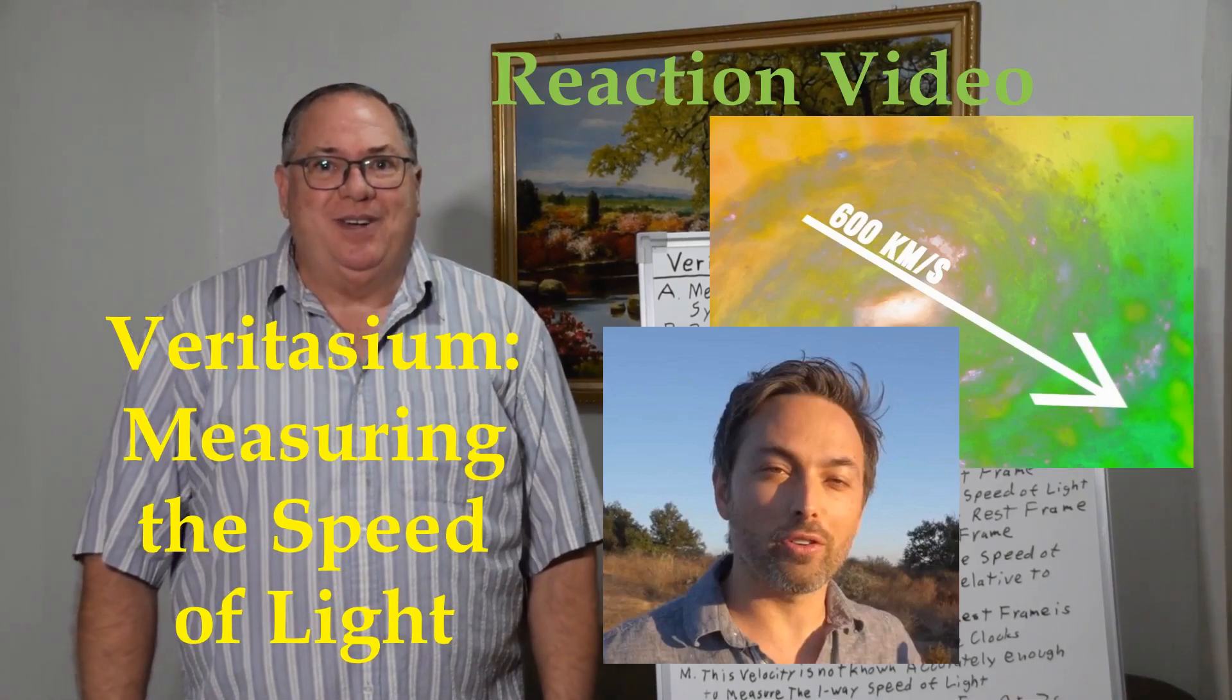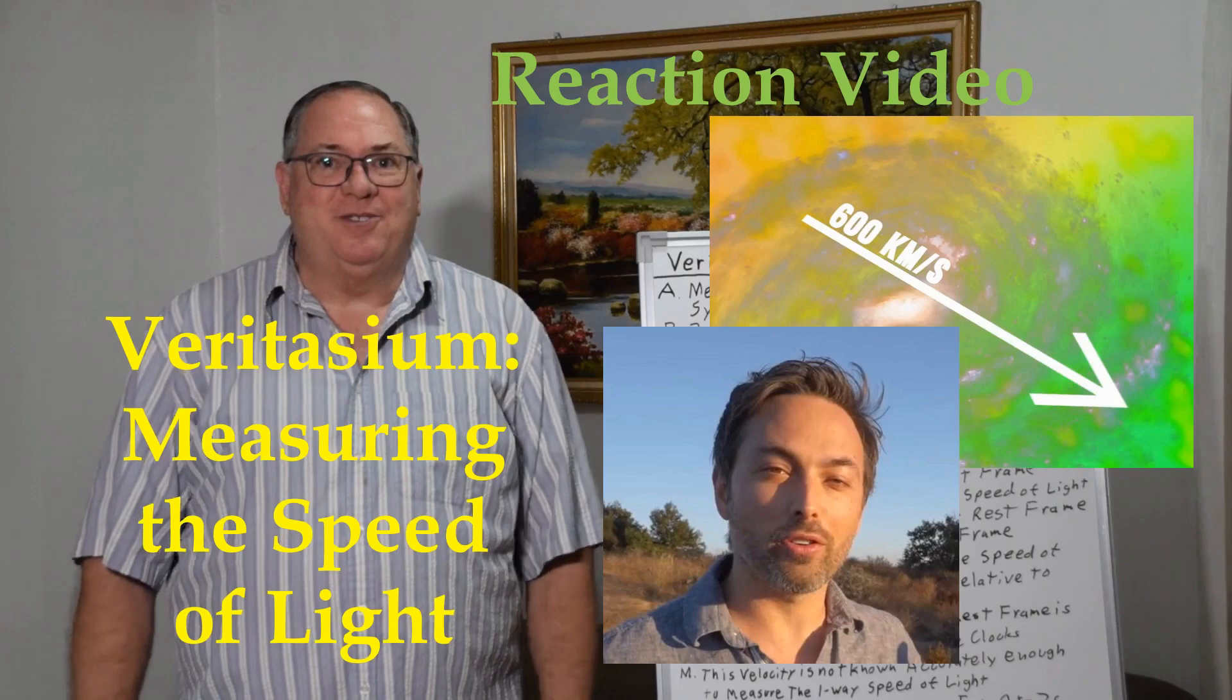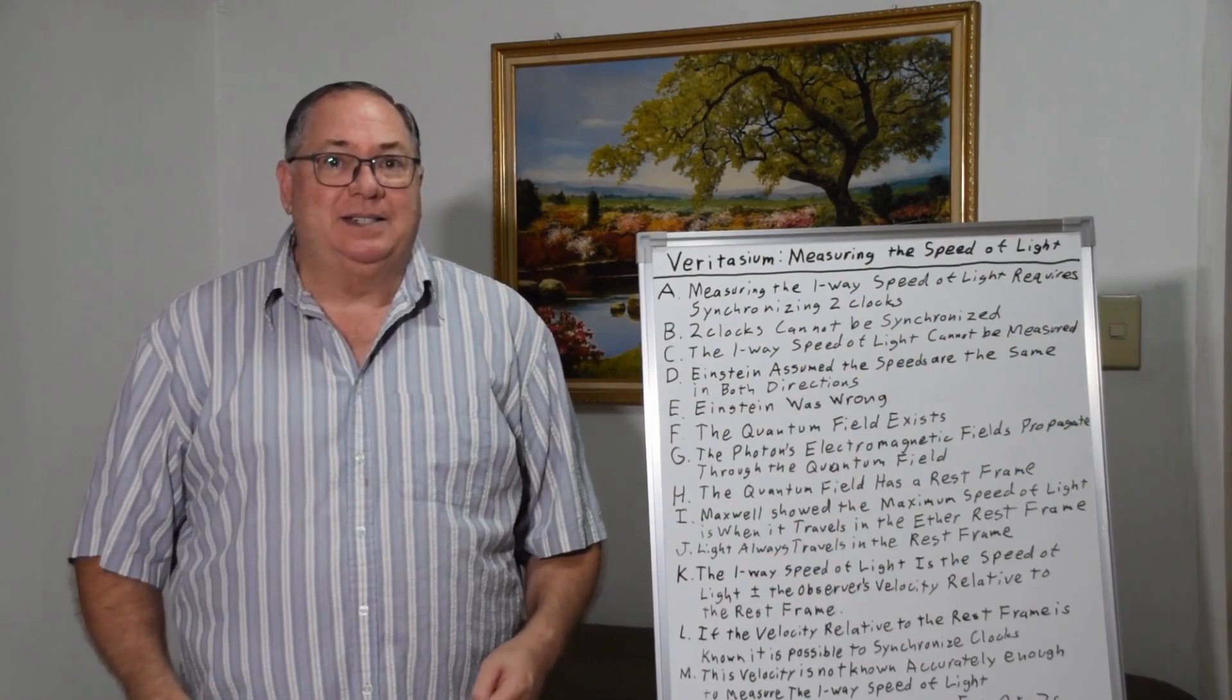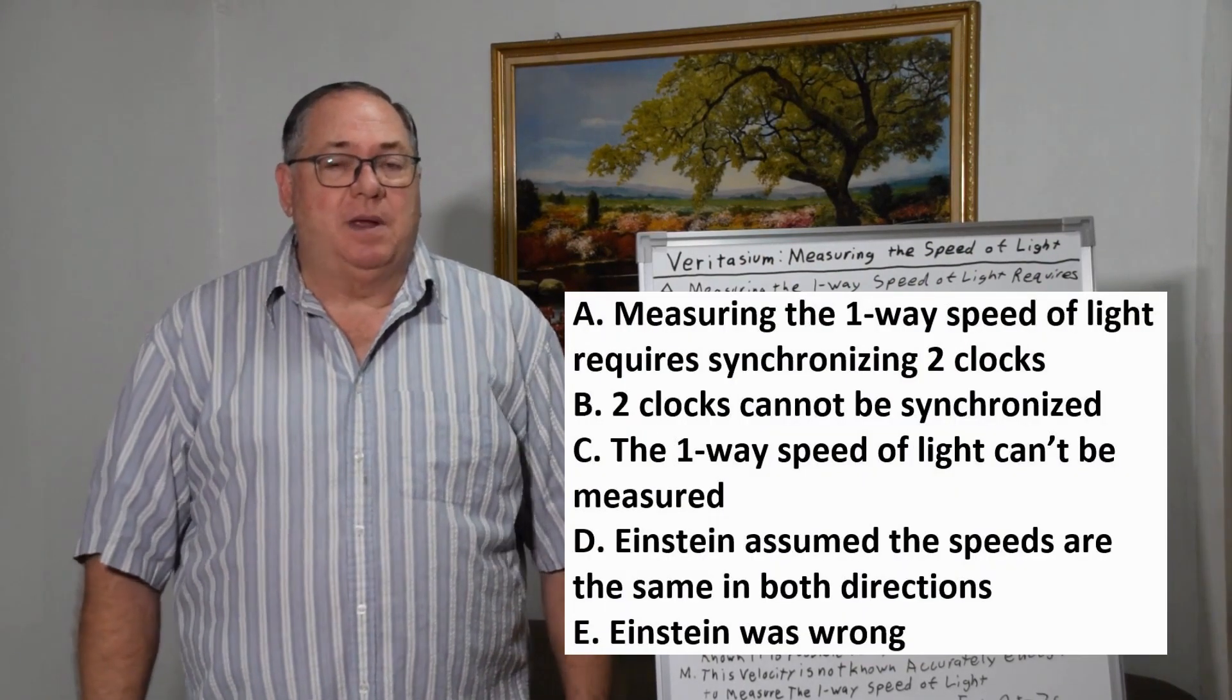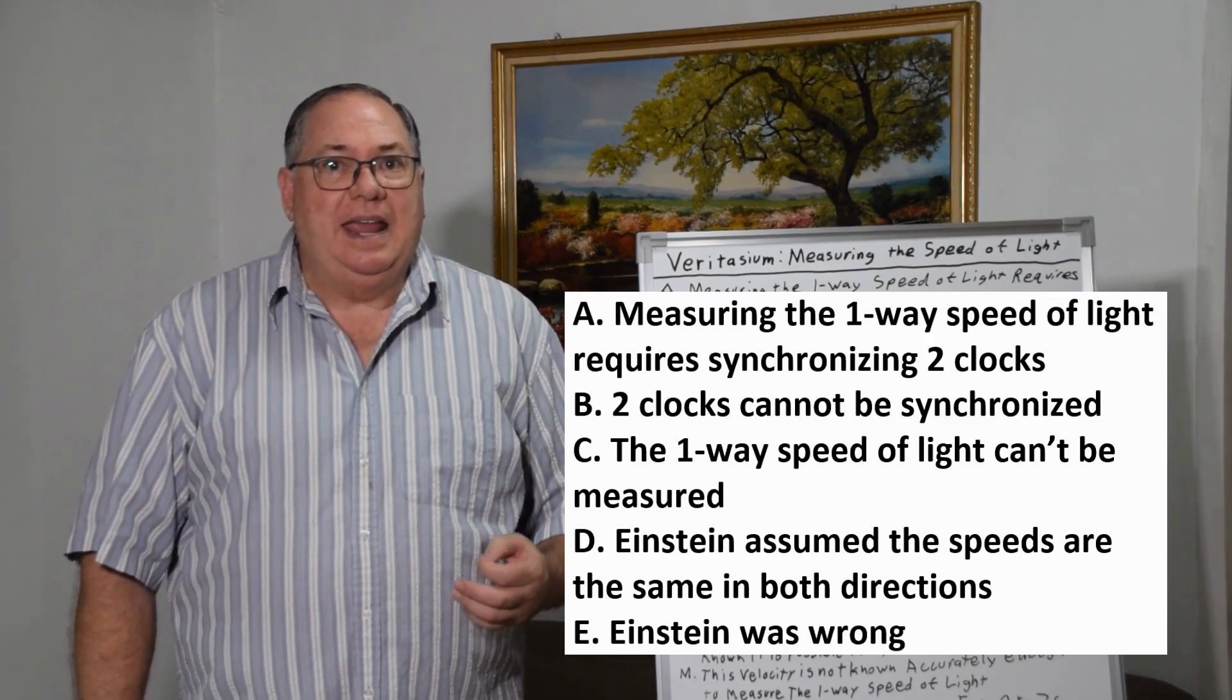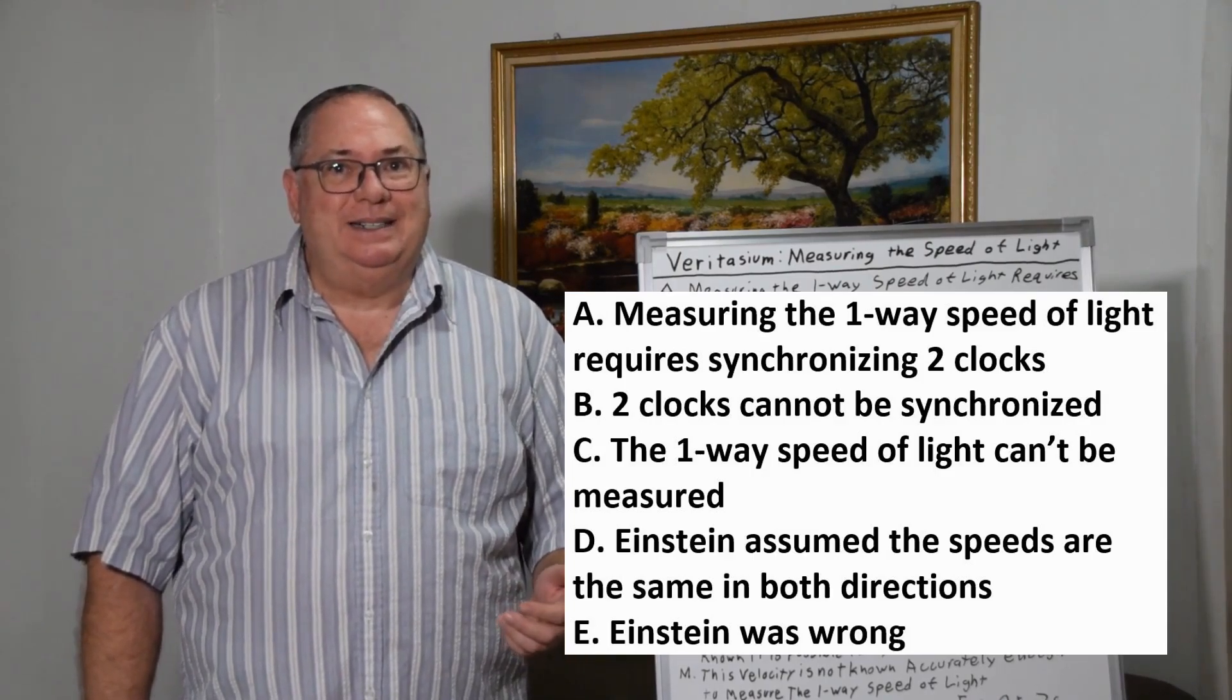One of my subscribers asked me to do a reaction video to a Veritasium video on why we can't measure the one-way speed of light. First I'd like to say I normally like Veritasium's videos, and in this case I really like this one, because he's pointing out the problems in Einstein's theory of Special Relativity. He almost says that Einstein was wrong, but he's not willing to go that far, but I am.